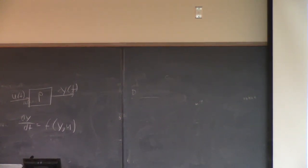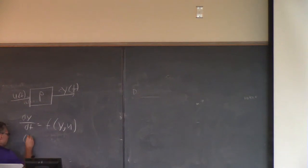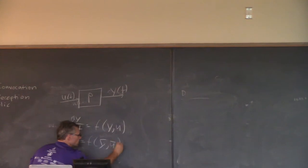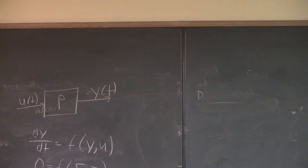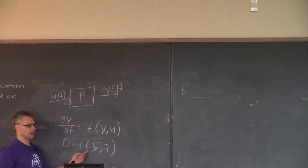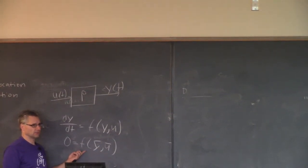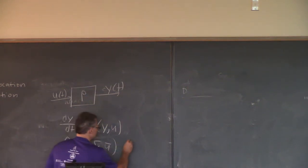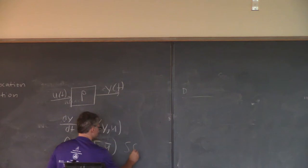We know that if we're interested in finding a steady state for this, you set the derivative equal to zero, and then the solution of this equation is called y-bar and u-bar. Typically I would give you the steady state value of the input, and then you would solve this equation for the steady state — we did this repeatedly in 361. These are the steady state values for this system.